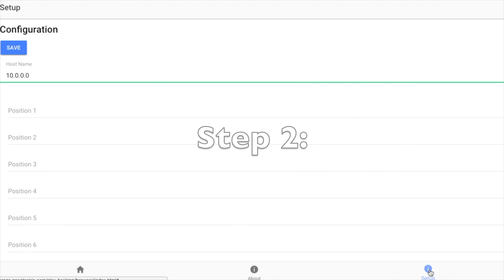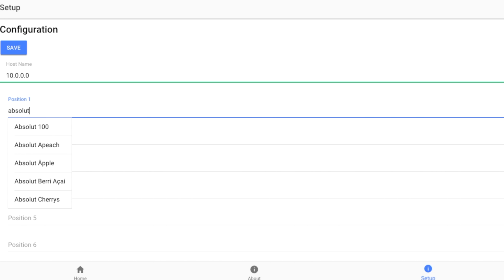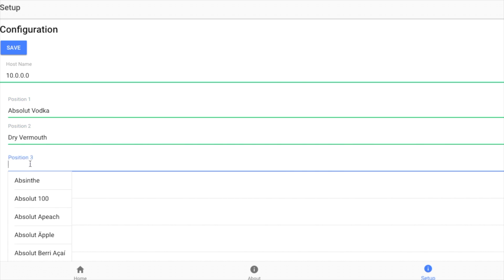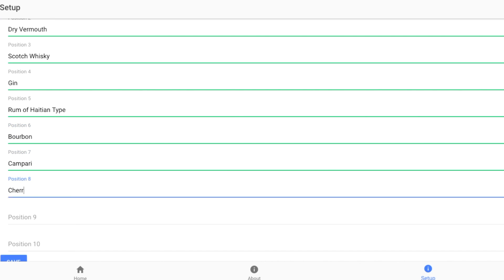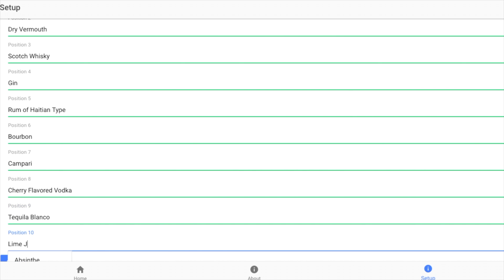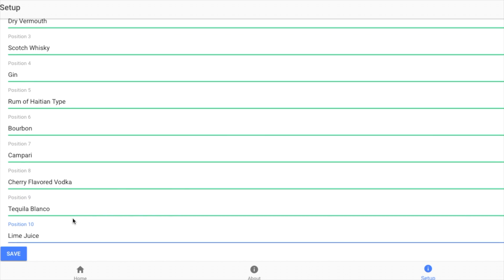In step two, we will place our order using the Sir Mixabot app. This is free and accessible through any wifi connected device with an internet browser. First off, we'll add our ingredients in the settings area, matching each drink position with the alcohol or mixer we just added.